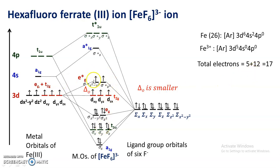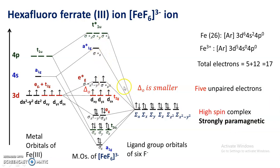All 17 electrons are now distributed in the molecular orbitals; the remaining anti-bonding orbitals are vacant. There are five unpaired electrons: three in the t2g level and two in the eg* level — five unpaired electrons in total. Therefore, hexafluoroferrate(III) is a high-spin complex and is strongly paramagnetic. Paramagnetism depends on the number of unpaired electrons; greater the number of unpaired electrons, greater the magnetism. When all electrons are paired, the complex is diamagnetic.